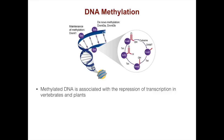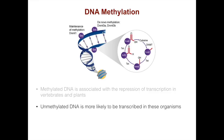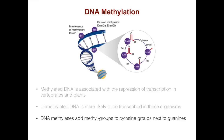DNA methylation is another important method of transcription control in vertebrates and plants. Methylated DNA is associated with the repression of transcription. Therefore, unmethylated DNA is more likely to be transcribed in these organisms. DNA methylases add methyl groups to cytosine bases next to guanines. These regions are CpG islands and are found near transcriptional start sites.